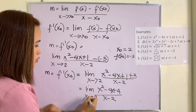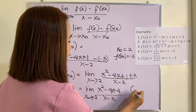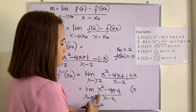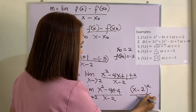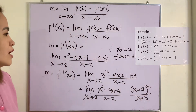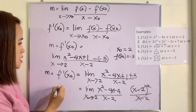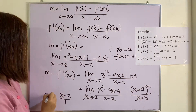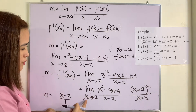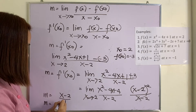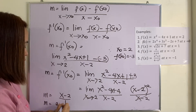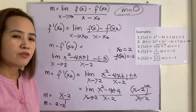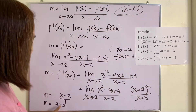This one is factorable as a perfect square trinomial — a PST — and can be factored as (x minus 2) squared, over (x minus 2). You can cancel one factor, so what is left is x minus 2. Therefore, we substitute x equals 2: M is equal to 2 minus 2. So our M is equal to 0, and our first derivative is also 0, because 2 minus 2 is 0.